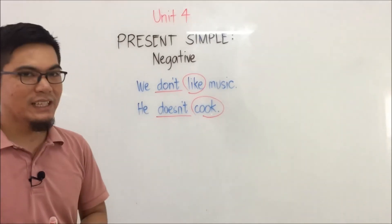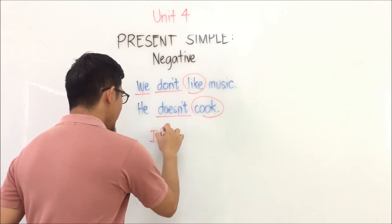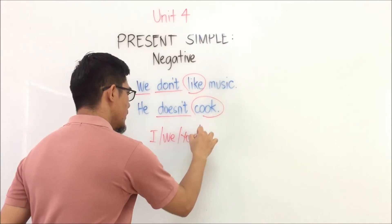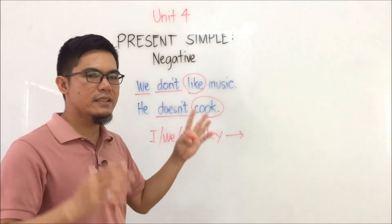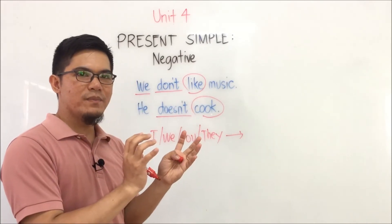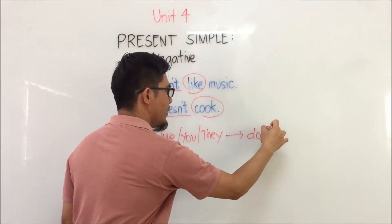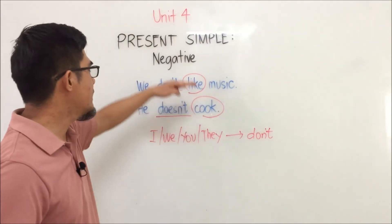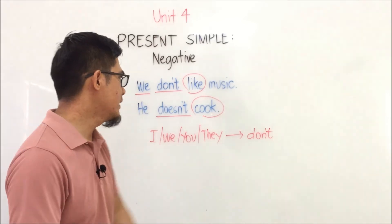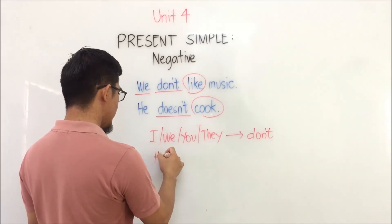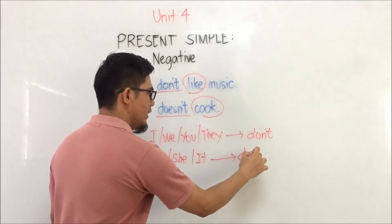Remember, there are only two rules. For the pronouns I, we, you, they — these are plural pronouns — always use don't before the verb. For example: 'We like music' becomes 'We don't like music.' Always use don't. Now, what about he, she, it? For he, she, it — singular pronouns — we use doesn't.